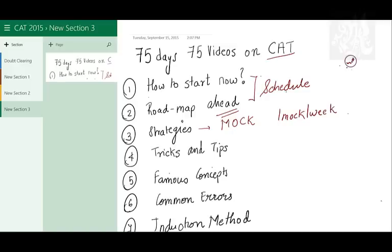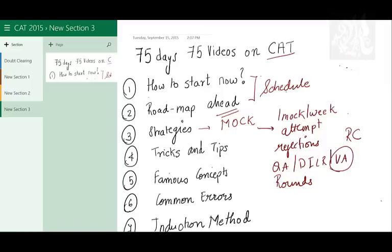So make sure you write your mocks so that you can have strategies. You must have attempt strategies, rejection strategies. There are three sections: quant, DILR, and verbal. You must have separate strategies like how many rounds would you take in these sections, which kind of questions would you leave and which kind of questions you would do at the start. For example, in verbal, you'll probably have RCs towards the end or RCs somewhere in the middle. This all depends on the number of mocks you write. The more mocks you write, the better understanding of yourself you have. So you can get strong and weak areas if you write mocks.